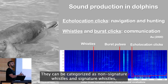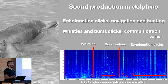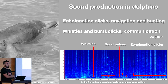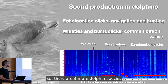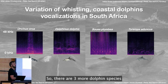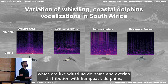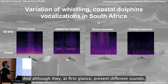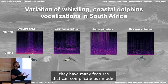Whistles can be categorized as non-signature whistles and signature whistles, which are like a name for them. There are three more dolphin species that are whistling dolphins and overlap in distribution with humpback dolphins: the killer whale, common dolphins, and the Indo-Pacific bottlenose dolphin. And although at first glance they seem to produce very different sounds, they have many features that can complicate our model.